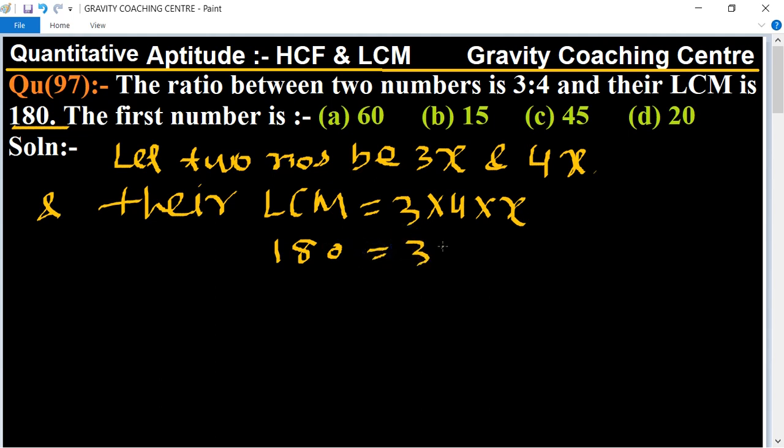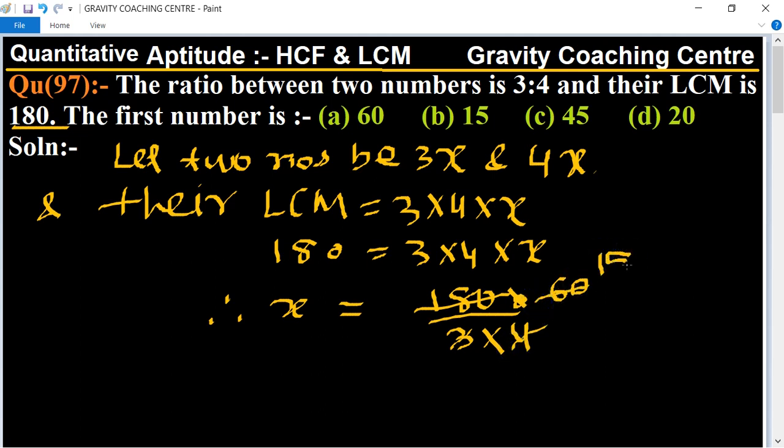Equal to 3 into 4 into x therefore x equal to 180 upon 3 into 4. So table of 3, 6 3 is 18 and table of 4, 15 so x equal to 15.